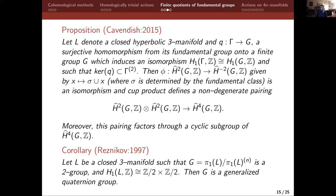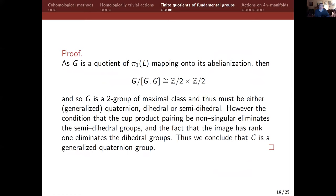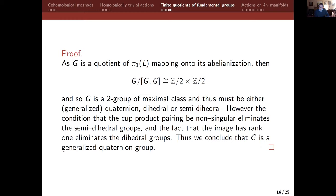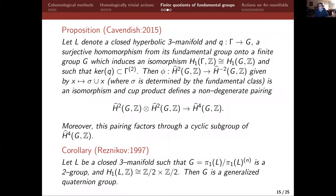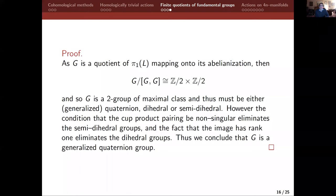This gives you as a corollary the following result due to Reznikov. Let L be a closed 3-manifold such that G — that is pi1(L) modulo the nth stage of the derived series — is a 2-group, and H1 of L over Z is isomorphic to Z2 bar Z2. Then G is a generalized quaternion group. Why is this true? G is a quotient of pi1(L) mapping onto its stabilization, so G is also Z2 bar Z2. G is what they call a 2-group of maximal class, and thus must be either generalized quaternion, dihedral, or semi-dihedral. However, the condition that the cup product pairing be non-singular eliminates the semi-dihedral groups, and the fact that the image has rank one eliminates the dihedral groups. So you conclude G is a generalized quaternion group.